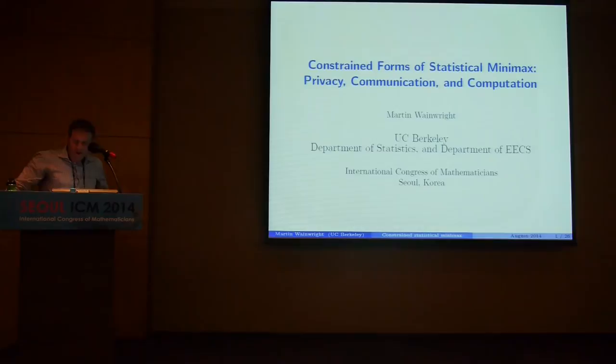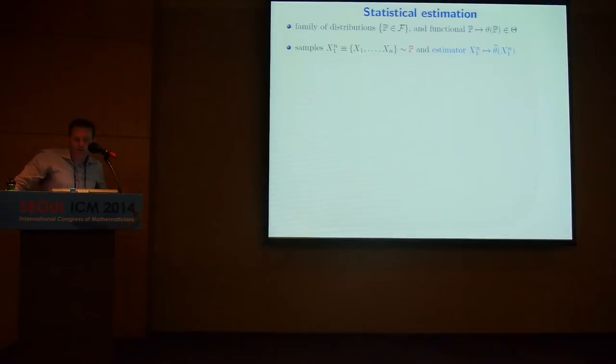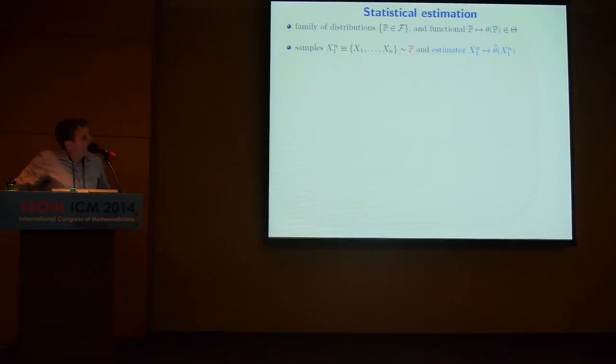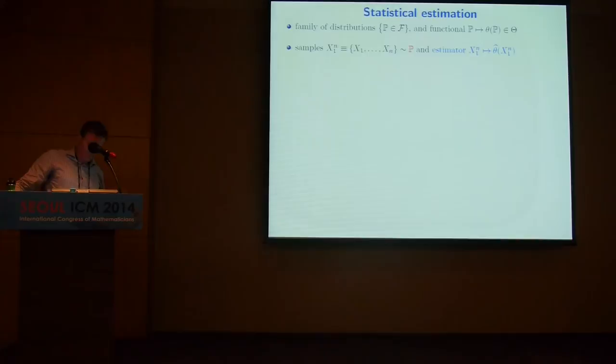Let's begin by saying what we mean by statistical estimation in an abstract sense. We have some family of distributions P. We have some functional on that family — it could be something like the mean of the random variable, or something more general like a density function. Some quantity of interest that we'd like to estimate we call theta. We're given samples drawn according to some P, and an estimator is a measurable function of those samples that maps the data to some estimate, theta hat.